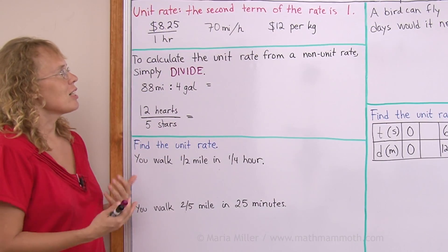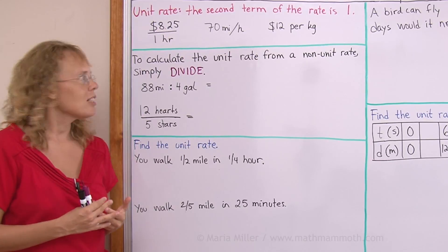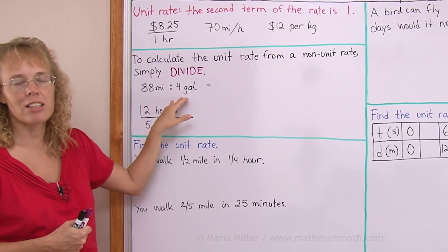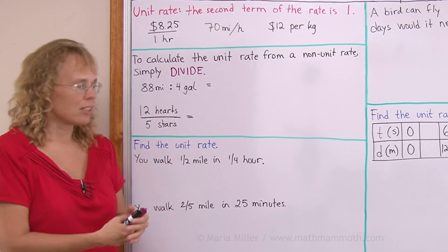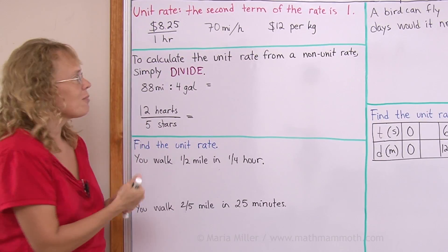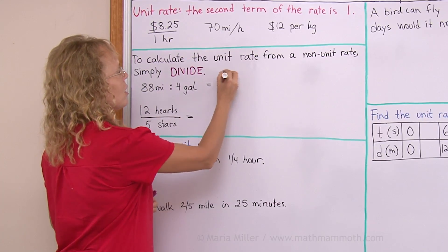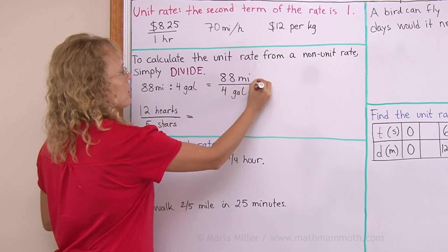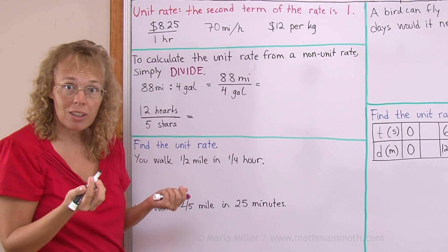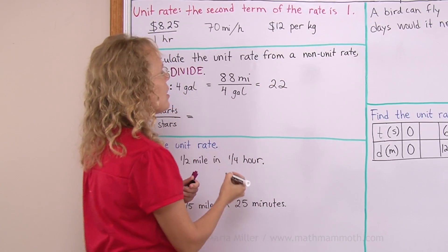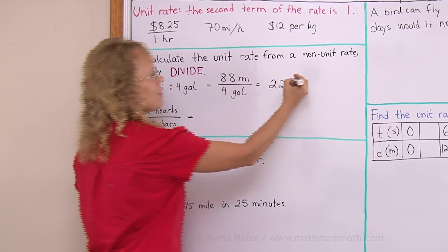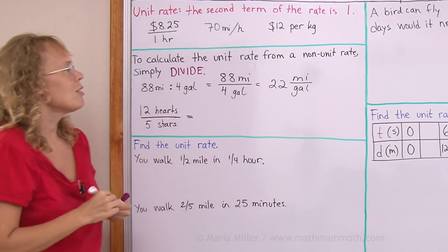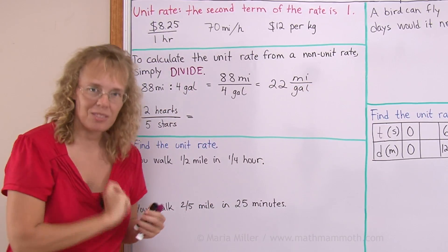Now, to calculate the unit rate from some other rate that is not a unit rate, you simply divide. For example, if you have 88 miles per four gallons, or 88 miles to four gallons, then we do the division here. Let me write this first using the division line. 88 miles divided by four gallons. And then 88 divided by four is 22. And then we get our unit as miles per gallon.